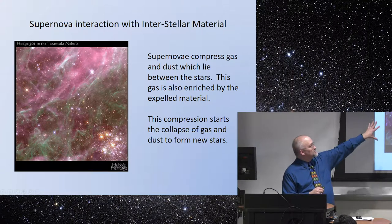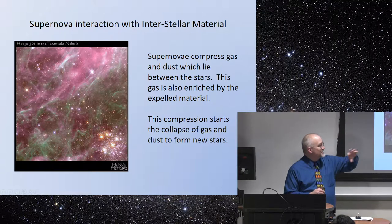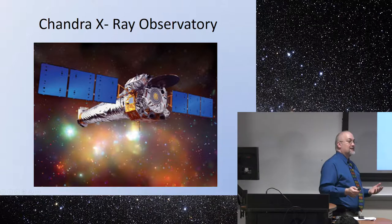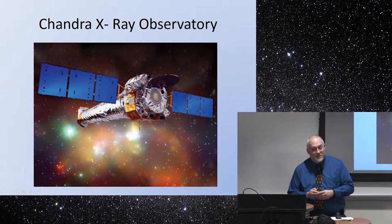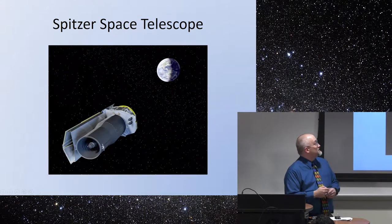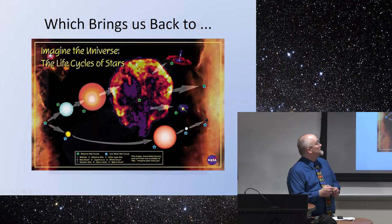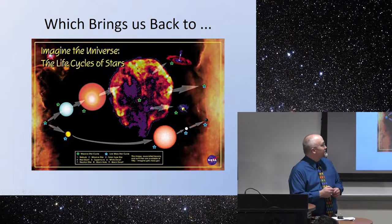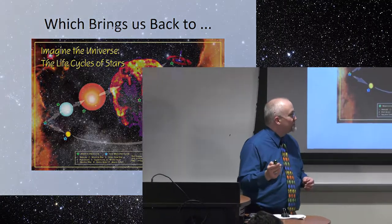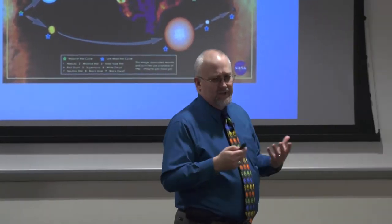So from there the supernova explosion compresses the gases, starts the collapse of gas and dust, and we start new stars — ending up going all the way back to the beginning. How we know some of this: the Chandra X-ray Observatory looks in the X-ray part of the spectrum and sees those accretion disks; the Spitzer Space Telescope has been helping us get this information. But all of it brings us right back to where we started, with new stars forming from the remnants of that supernova explosion. That really is the life cycle of stars.